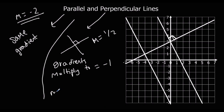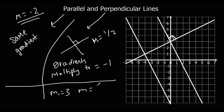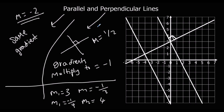So let's say we had a gradient of 3. The perpendicular gradient — so if m1 is 3, the perpendicular gradient is minus 1 over 3. If we had an original gradient of minus a quarter, the perpendicular gradient would be positive 4. So it's always going to multiply to give minus 1. We flip and minus the gradient to find the perpendicular gradient.